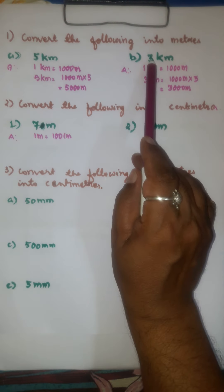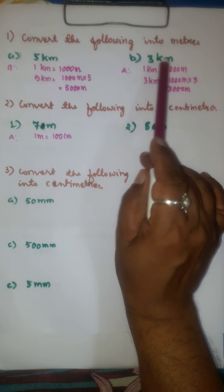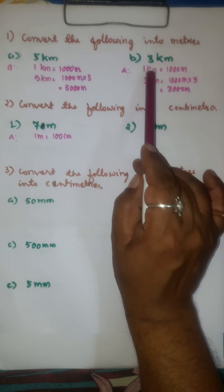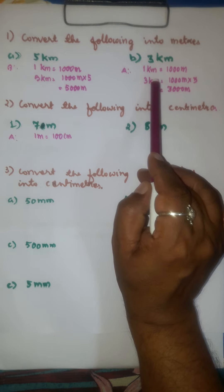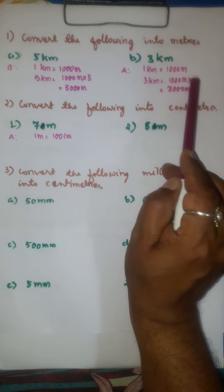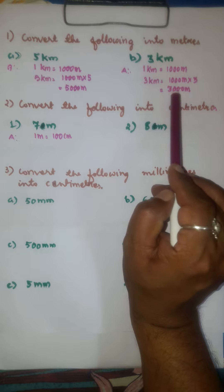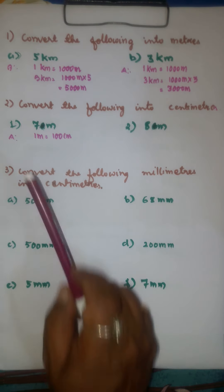Second, we have 3 kilometers. We know 1 kilometer is equal to 1000 meters. So, 3 kilometers is equal to 1000 meters into 3. That is 3000 meters.